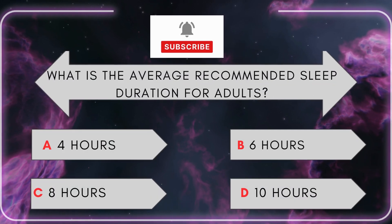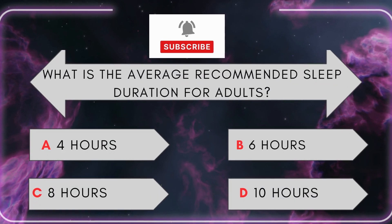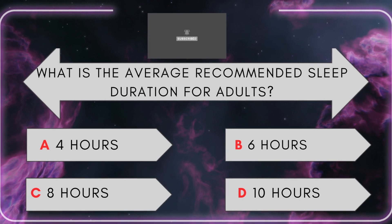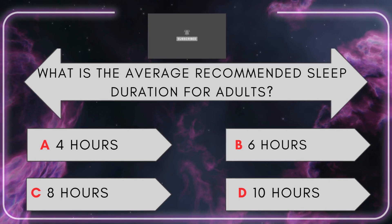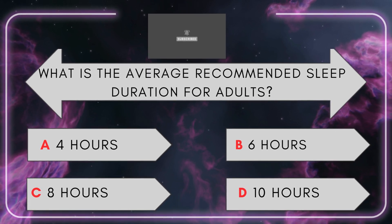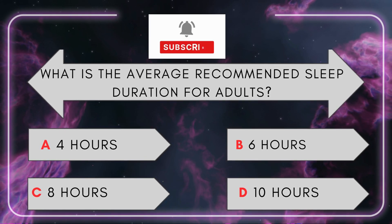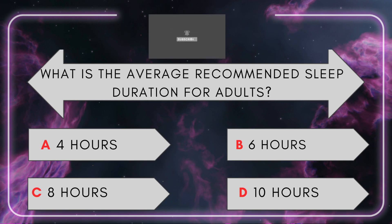What is the average recommended sleep duration for adults? A. 4 hours. B. 6 hours. C. 8 hours. D. 10 hours.